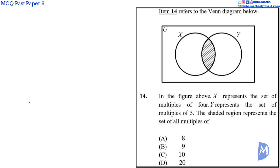Question 14. X, the set of multiples of 4, is equal to 4, 8, 12, 16, 20, 24, 28, 32, 36, 40, 44, and so on.